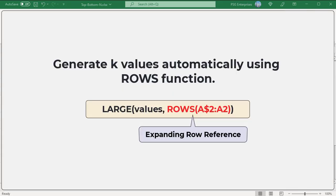Sometimes entering all the k values becomes cumbersome. We can automatically generate the k values. Instead of typing the values, you can use the ROWS function with an expanding range reference to generate the k values automatically. Use this generic formula. The ROWS function with an expanding range reference like ROWS(A$2:A2) generates the k values automatically.